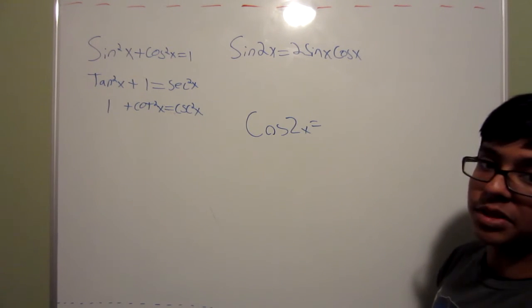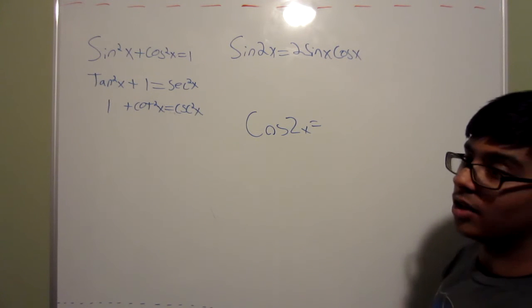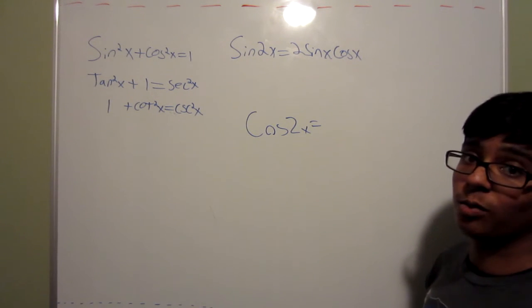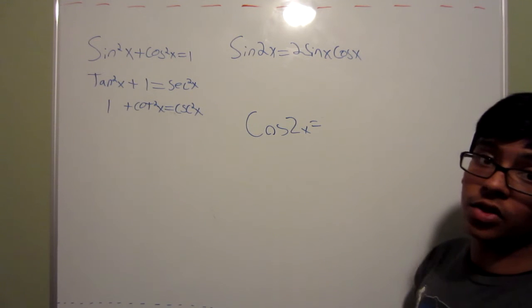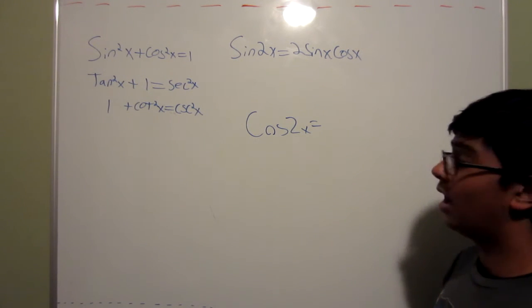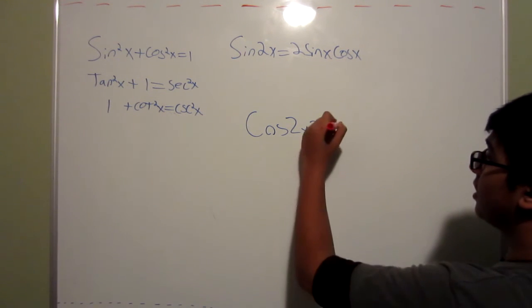Alright, now moving on to the more complicated one, we have cosine 2x. Now, you really only need to memorize one formula, and then from there you can do different things to get the other two formulas of cosine 2x. The one you need to remember is...